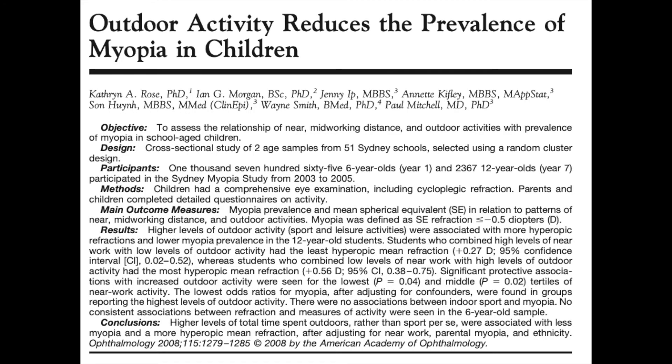Those scary numbers about myopia prevalence in 2050 can perhaps be reduced if we look after our kids' vision. Here's a link to an article whose title states that outdoor activity reduces the prevalence of myopia in children. The article discusses how children who spent over two hours doing outdoor activities had much lower levels and prevalence of myopia compared to those who spent less time outdoors. This may seem obvious, but it's nice to see the research bears it out.